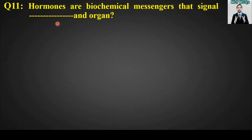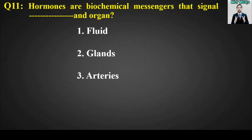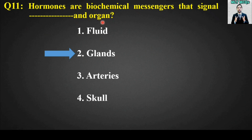MCQ number 11: Hormones are biochemical messengers that signal blank and organ. This MCQ is very important. Options are: fluid, glands, arteries, or skull. The right answer is option number 2, glands. Hormones are biochemical messengers that signal glands as well as organs.